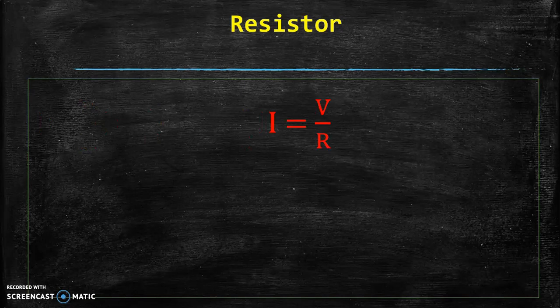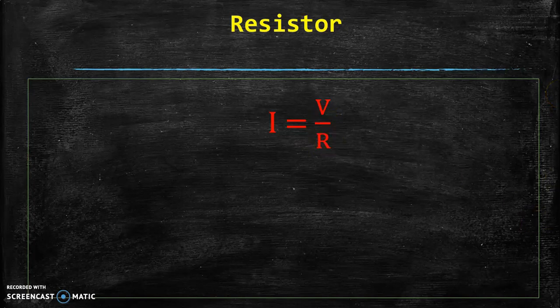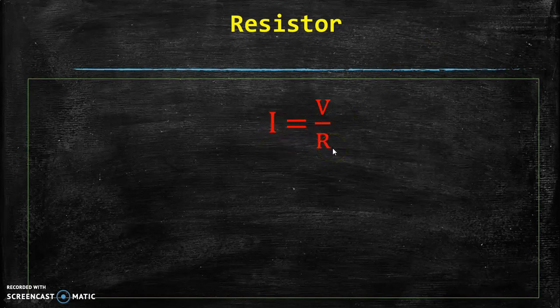When we apply a voltage V across a conductor of resistance R, then current I will flow through the conductor and I can be given as V divided by R. The property of resistance is to oppose the flow of current. From this equation we can see that current I is inversely proportional to resistance. So if resistance of any conductor is more, current flowing will be less, and vice versa.